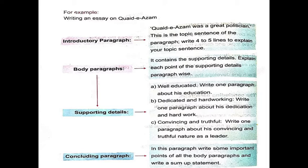Supporting details: A. Well educated — write one paragraph about his education. B. Dedicated and hard working — write one paragraph about his dedication and hard work. C. Convincing and truthful — write one paragraph about his convincing and truthful nature as a leader.